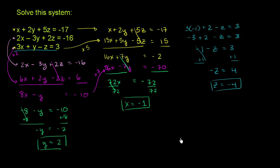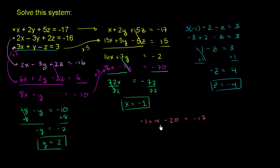Let's verify the solution x equals negative 1, y equals 2, z equals negative 4 satisfies all three constraints. For the first equation: x plus 2y plus 5z equals negative 1 plus 2 times 2 plus 5 times negative 4, which is negative 1 plus 4 minus 20. That gives positive 3 minus 20, which is indeed negative 17. It satisfies the first constraint.